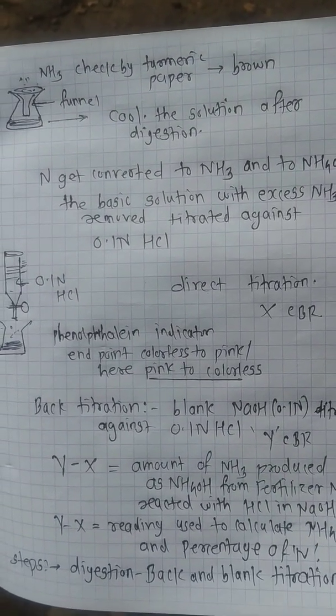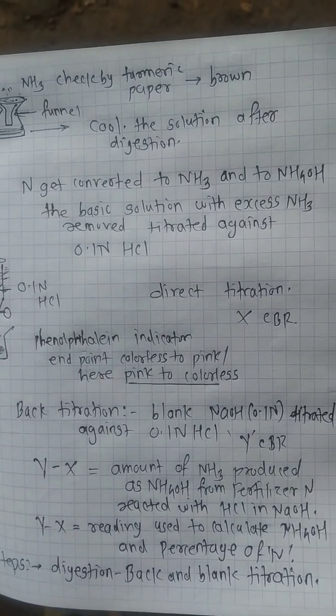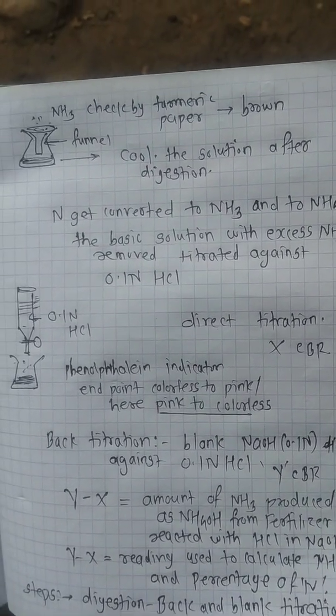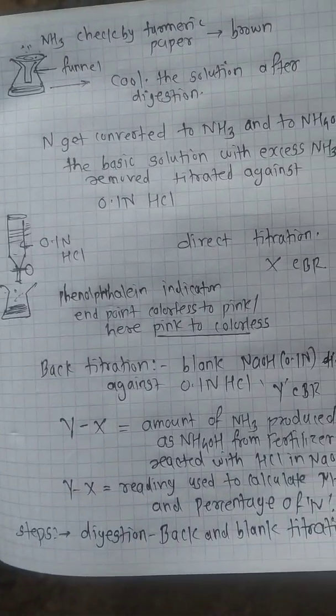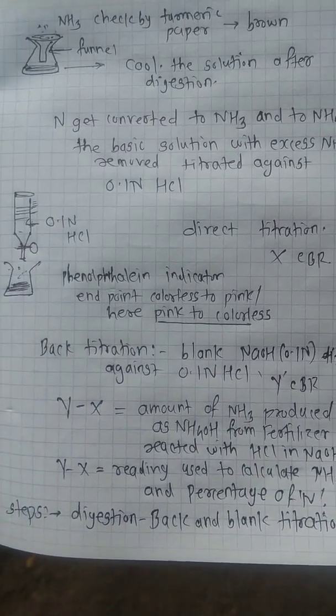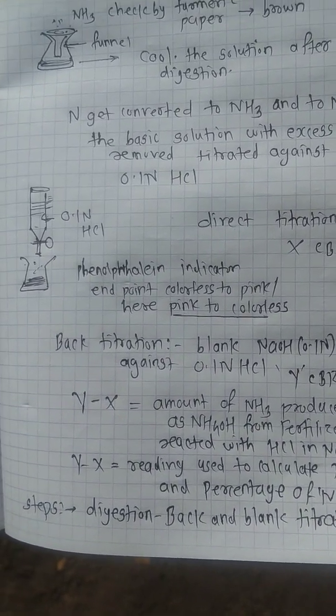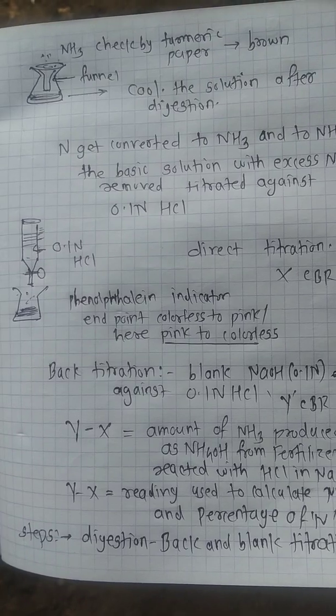Now this solution is titrated against 0.1 normal HCl as acid-base titration. There are two types of titration used in this analysis: direct and back titration. It is blank and back titration.